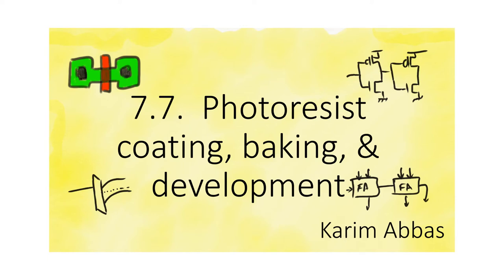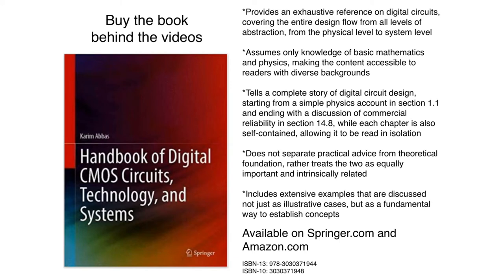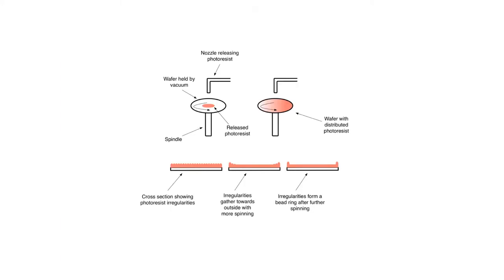An important step in photolithography is the spreading of photoresist on top of the wafer. Photoresist is by default a liquid material, and we want to spread it on top of the wafer to form a regular film of photoresist, then solidify it into a solid. Applying it as a liquid allows us to form a fairly regular coat on the wafer.